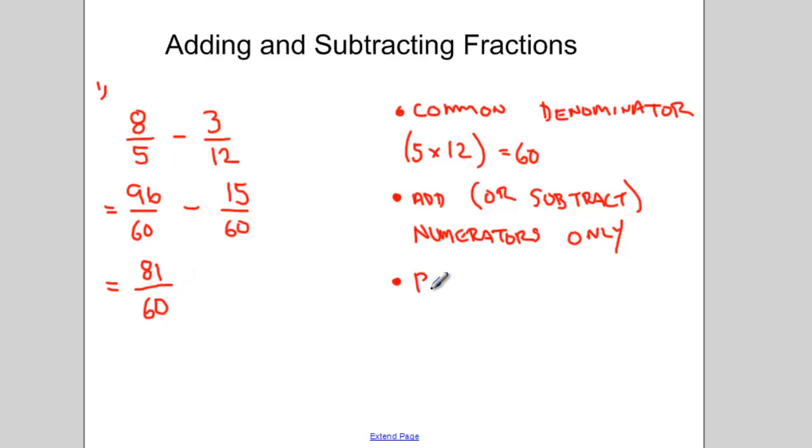My last step when working with fractions is to see if I can reduce the fraction. So I'm looking for a number that can divide evenly into both 81 and 60, and I think that number is 3. If I can divide 81 by 3 and 60 by 3, I'll be able to reduce this fraction to 27 over 20. And that's my final answer.